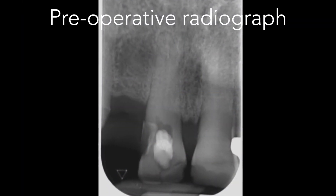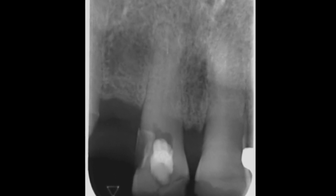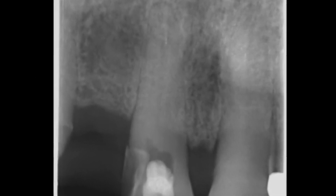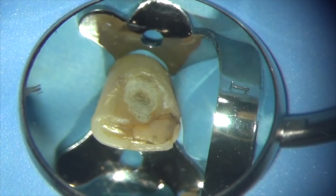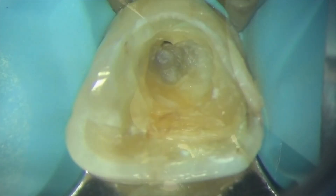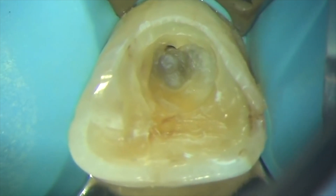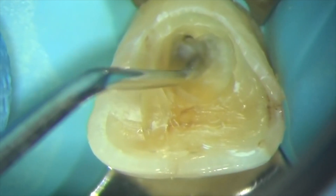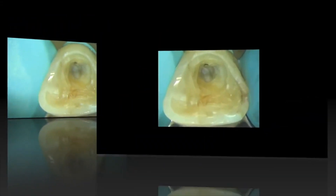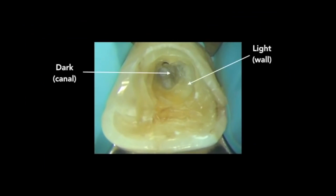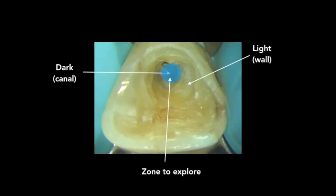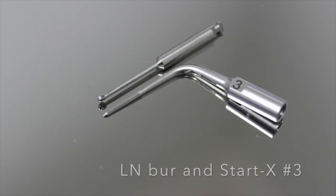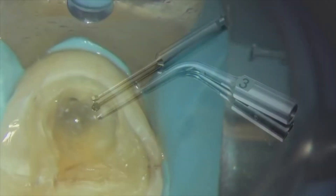So in this case we have a similar situation: the maxillary central incisor is heavily restored with composite and a huge access cavity has been created in trying to find the sclerosed root canal. The temporary restoration is simply removed with a long tapered diamond burr. With the temporary removed, we're now looking under high magnification into the access cavity and we can see two layers of dentine — a dark layer where the sclerosed root canal lies, and a lighter layer which is the wall. I'll be using a combination of an LN burr and the Satelec 3 ultrasonic tip to remove sclerosed dentine and locate the orifice of the root canal.